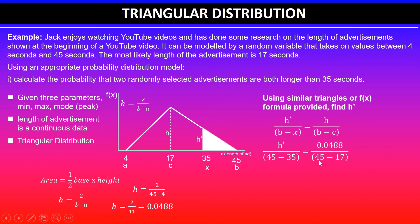We'll now substitute these numbers in. So h dash is equal to b minus x, so b is 45, so 45 minus x which is 35, is equal to height h which is given by 2 over b minus a. We have already calculated that so it's easier to put that value, 0.0488, divided by b minus c, so b is still 45, so 45 minus c is 17.